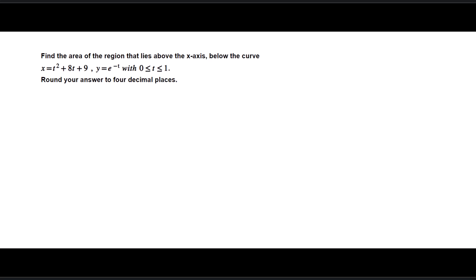We worked on this exercise from our assignment. We have to find the area that lies between the x-axis and between the points that correspond to t equals 0 to t equals 1. When t equals 0, x is t squared plus 8t plus 9, that would be 9, and y will be e to the negative 0, that is 1.